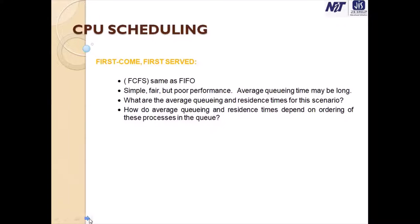First Come First Serve scheduling is the simplest scheduling algorithm, but it can cause short processes to wait for a long process. The Shortest Job First (SJF) scheduling algorithm is probably optimal — it provides the shortest average waiting time. However, implementing SJF is difficult because detecting the length of the next CPU burst is difficult. SJF is a special case of the general priority scheduling algorithm, which simply allocates the CPU to the highest priority process.